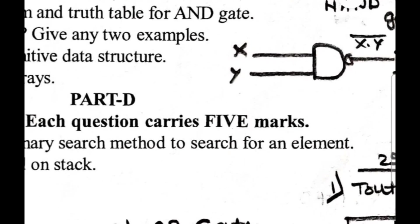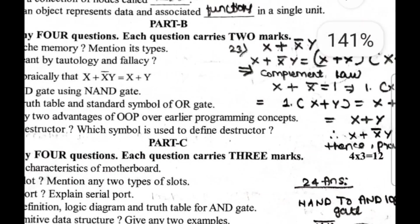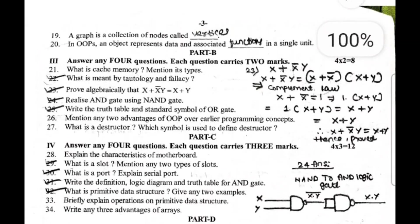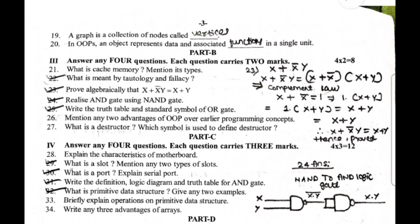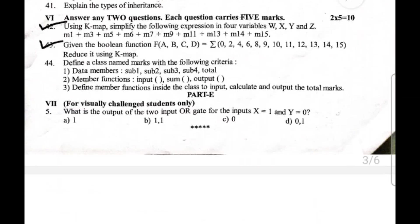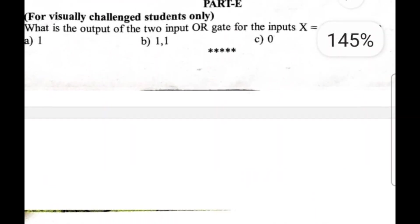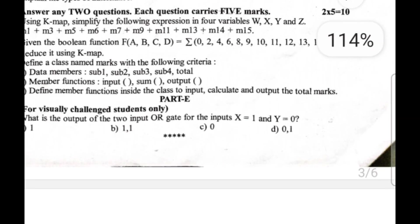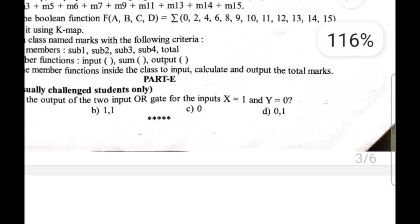Part C: answer any four questions, each question carries three marks. 30th question: what is slot, mention any types of slots. What is port, explain serial port. Write a definition, logic diagram and truth table for NAND gate. The answer for that is here - truth table for AND gate and this is the logic diagram for AND gate.